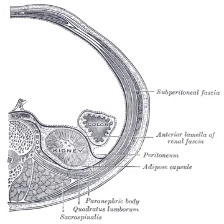The perirenal space is bounded by the anterior and posterior leafs of the renal fascia. It contains the following structures: adrenal gland, kidney, and renal vessels. The anterior pararenal space is bounded by the posterior layer of peritoneum and the anterior leaf of the renal fascia. It contains the following structures: